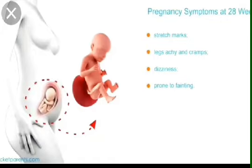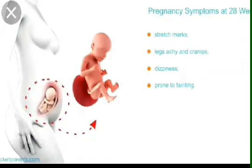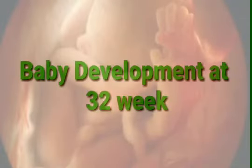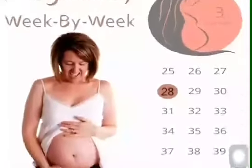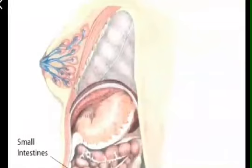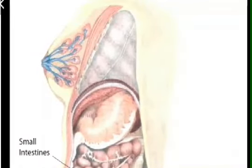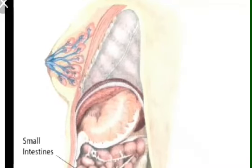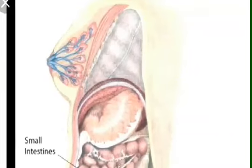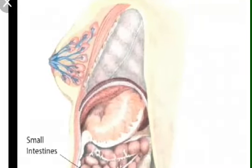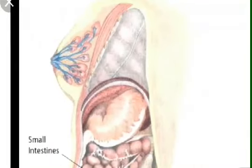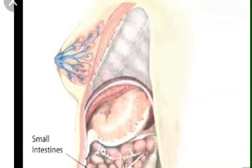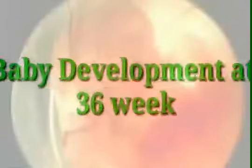Baby's development at 32nd week: Many babies weigh about four pounds and have movements that the mother can feel. Around this time, the womb begins to leak a yellowish fluid from the breast. This is normal — this fluid is colostrum, and its presence indicates the breasts are preparing to start producing milk for the new baby.